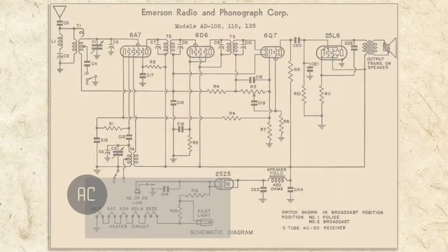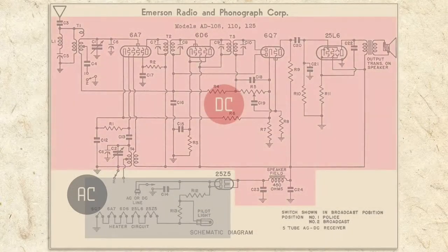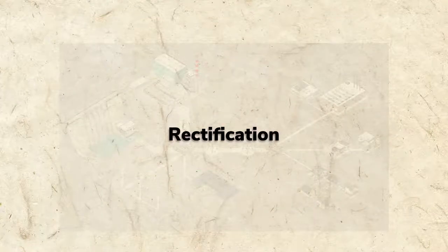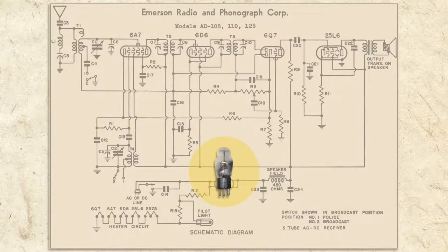As you can see on the schematic, some of the circuit uses AC, but most is DC. Again, converting AC to DC is called rectification. In our radio, this is the job of the rectifier tube. I'll describe it in more detail later, but for now, all you need to know is that it's a diode.